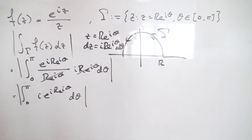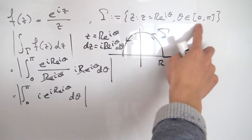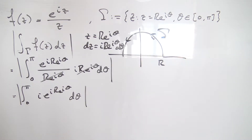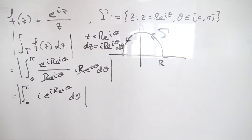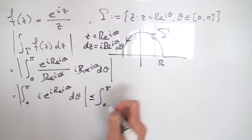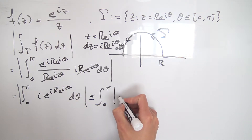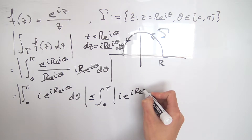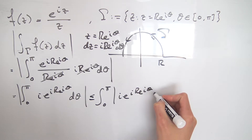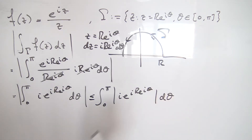Since theta is a real variable ranging from 0 to pi, we can apply the integral inequality which says the absolute value of the integral is less than or equal to the integral of the absolute value. So this is less than or equal to the integral from 0 to pi of the absolute value of i times e to the i r e to the i theta d theta.